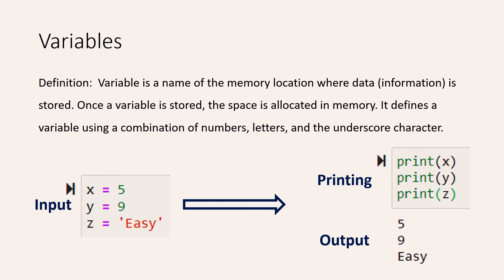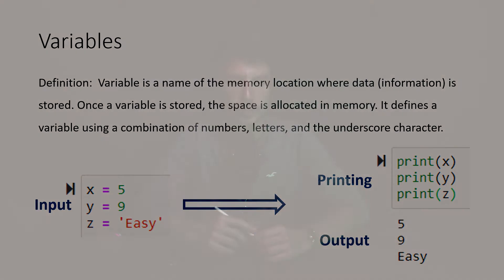First, the definition of a variable. A variable is a name of the memory location where data or information is stored. Once a variable is stored, space is allocated in memory. It is defined using a combination of numbers, letters, and the underscore character. In short, we could say that a variable is always a storage unit where you can put in whatever you would like to put in.